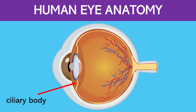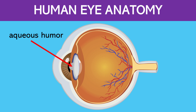Here is the ciliary body. This is the structure containing the ciliary muscle and ciliary processes. The ciliary muscle controls the shape of the lens and the ciliary processes produce the aqueous humor.